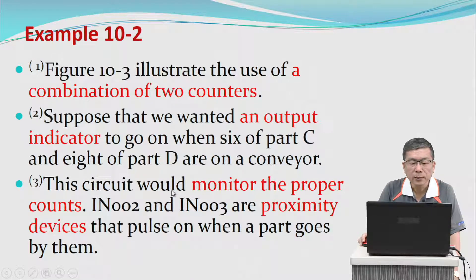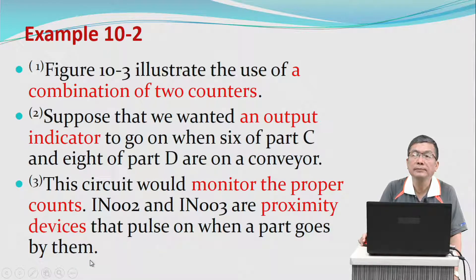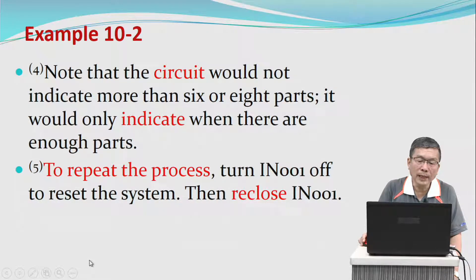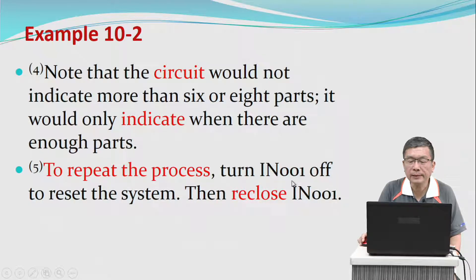The circuit would monitor the proper count. Input number 2 and input number 3 are proximity devices that turn on when a part goes on the conveyor. Note that the circuit would not indicate more than six or eight parts — it would only indicate when there are enough parts.